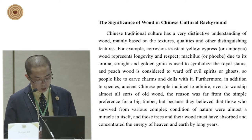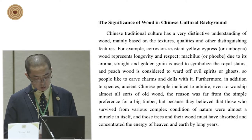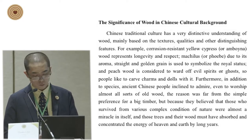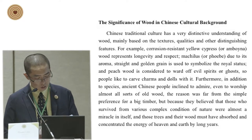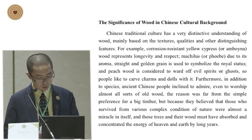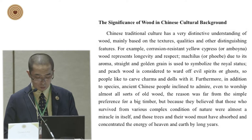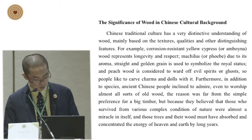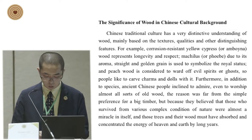Chinese traditional culture has a very distinctive understanding of wood, mainly based on the textures, qualities, and other distinguishing features. For example, corrosion-resistant yellow cypress represents longevity and respect. Phoebe, due to its aroma, grain and golden-green color, is used to symbolize royal status. And peach wood is considered to ward off evil spirits or ghosts, so people like to carve charms and door ornaments from it.